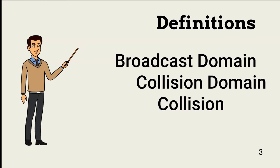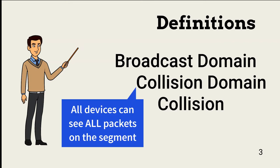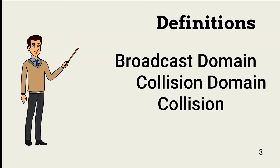Before looking at individual devices it's important to be sure we all have the same definitions in mind. A broadcast domain is a logical segment or set of segments on a network in which all connected devices can see all broadcast packets. A collision domain is another logical network segment where all devices can see all packets sent by domain members. Collision occurs when two devices on the same network segment attempt to send a packet at the same time. Reducing the number of devices on a collision domain with network segmentation reduces the number of collisions.